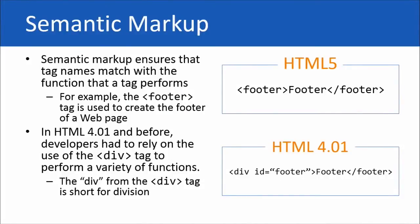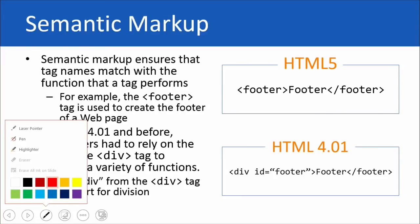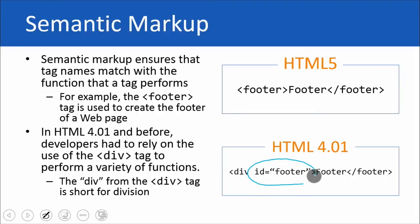Semantic markup ensures that tag names match the function a tag performs — so a footer tag is used to create a footer, and so on. In HTML4, we'd use div tags for everything — div is short for division — and we had to use the ID attribute to label what it was. So if it was a footer, we'd have to write ID footer. Up here with semantic HTML there's less typing; down here with div tags there is more typing.